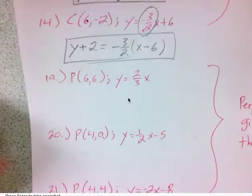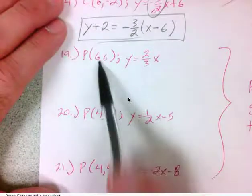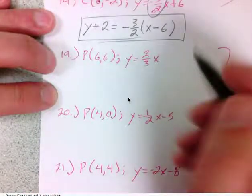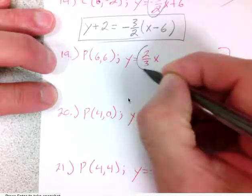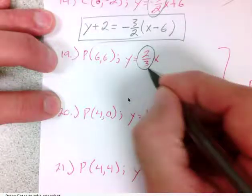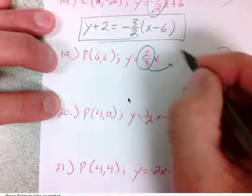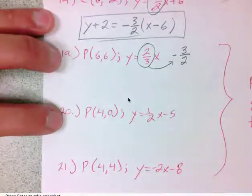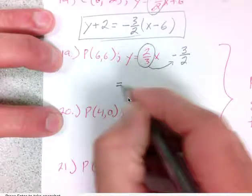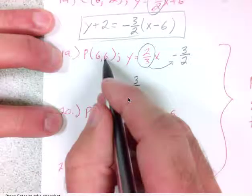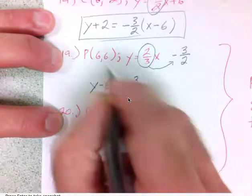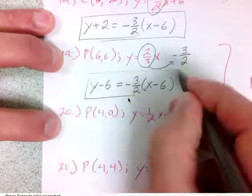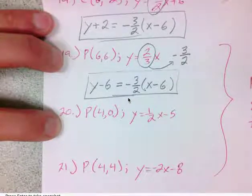The difference in questions 19, 20, and 21 is that I want a line through point P that is perpendicular to the given line. To find the slope of a perpendicular line, I need the opposite reciprocal of the given slope. For question 19, the given slope is two-thirds, so I flip it and take the opposite: negative three-halves. My point has coordinates (6, 6), so the equation is y minus six equals negative three-halves times the quantity x minus six.